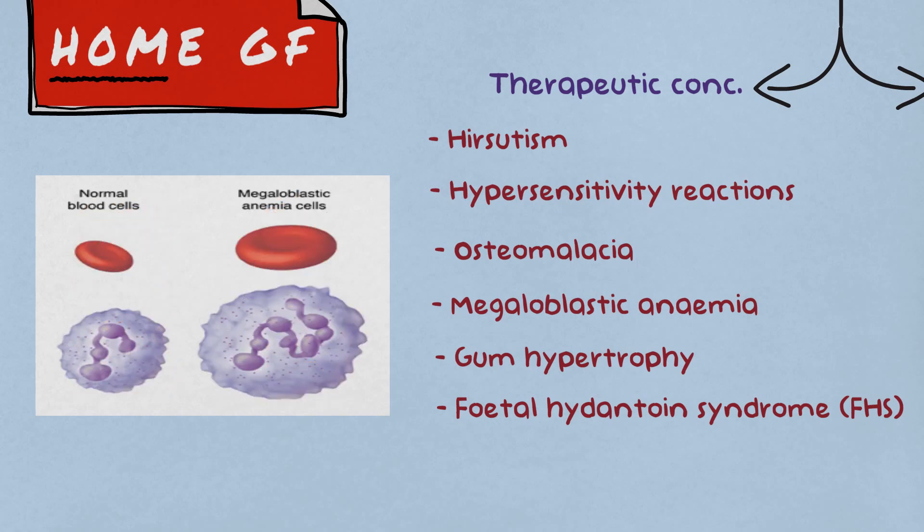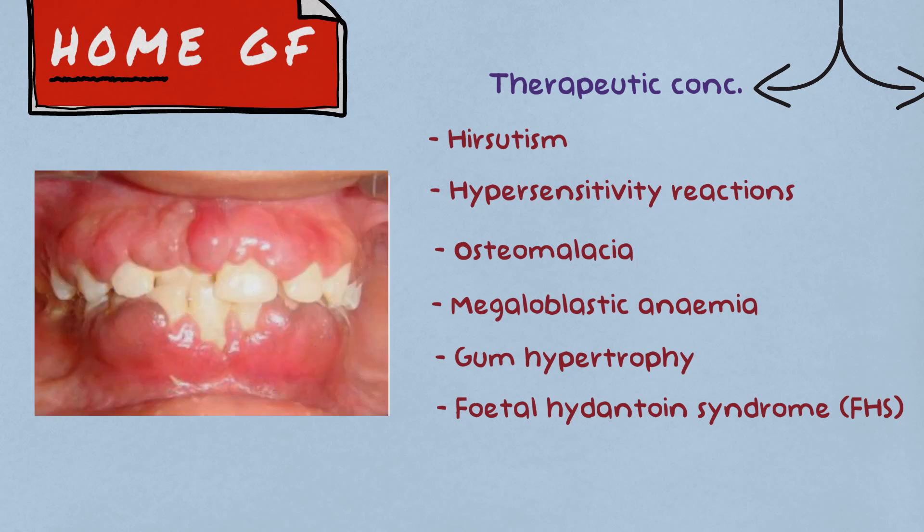Megaloblastic anemia. This is because phenytoin decreases the folate absorption. Gum hypertrophy. It is the commonest adverse effect of all.